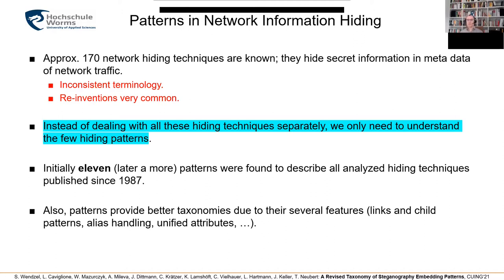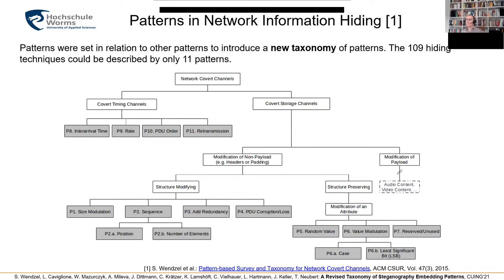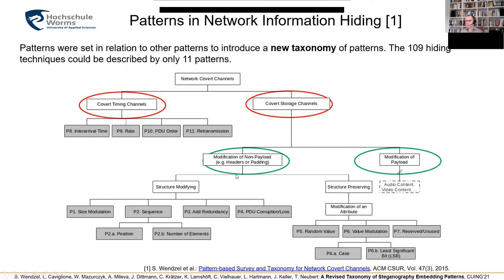Because patterns can be derived from each other, they can form taxonomies, and this is a big advantage for us. This was the first hiding patterns taxonomy for network steganography or network covert channels. As you can see, we have the classical distinction between timing and storage channels. We have four timing patterns, and we differentiated the storage channels into those that modify payload and non-payload, where modification of payload is mostly digital media steganography and out of scope in the original taxonomy. The non-payload — meaning headers, all the metadata and padding fields — are differentiated into methods that modify the structure of, for instance, a network packet, or that preserve the structure of a network packet.